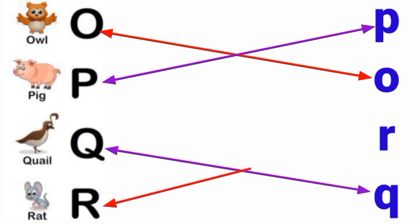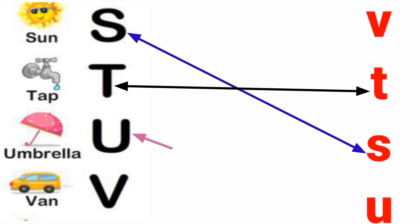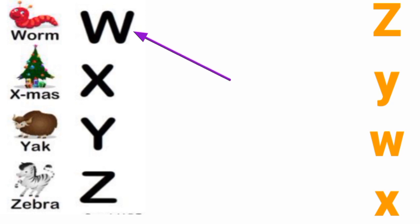R with rat. S with sun. T with tap. U with umbrella. V with van.